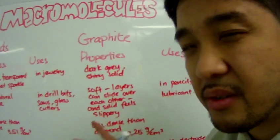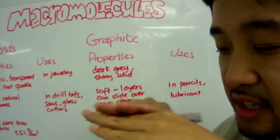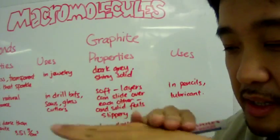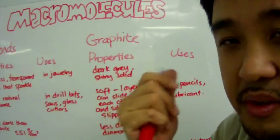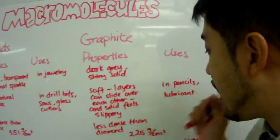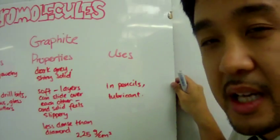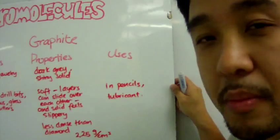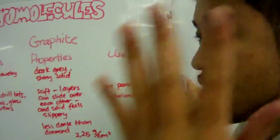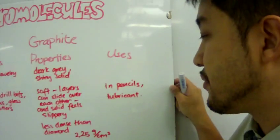Well, it's quite soft. The reason why it's soft is because it's made of layers. And these layers, held loosely, can slide over each other. And the solid feels slippery. This is why graphite makes great pencil leads and can be a heavy machinery lubricant.